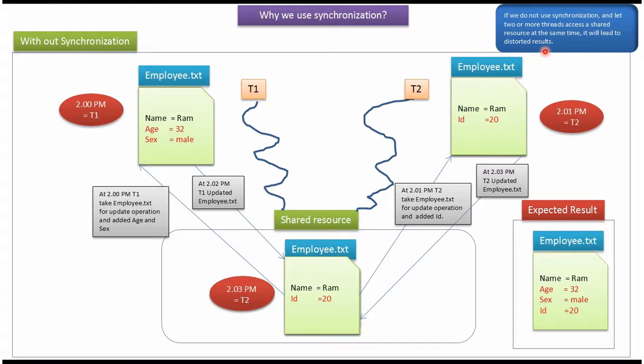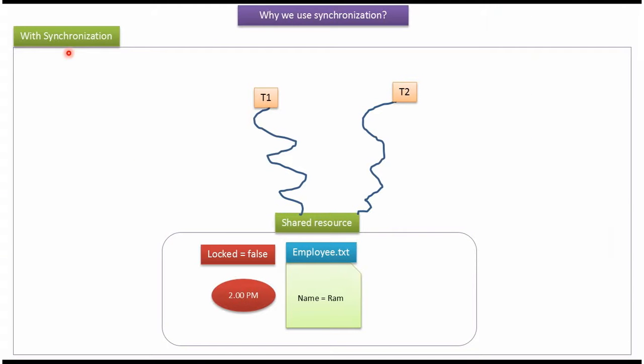If we are not using synchronization and if we allow two or more threads to access the shared resource at the same point of time, then this kind of inconsistency problem will occur. Now we will see with synchronization how to avoid the inconsistency problem.